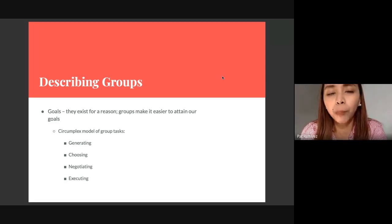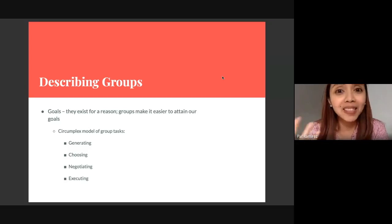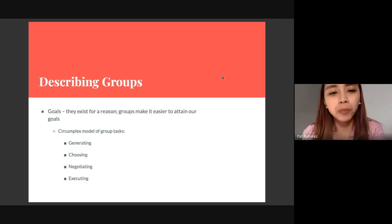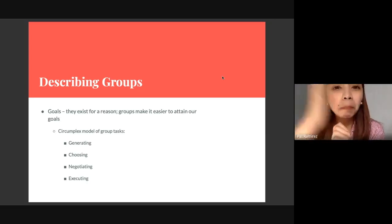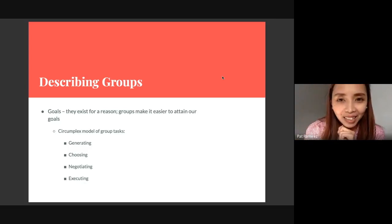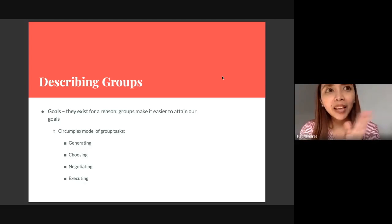We also have the concept of goals. In describing a group, we should know that groups exist for a reason, and sometimes the reason would be your objective or what we call goals. Groups make it easier to attain certain goals, which is why affiliation forms. When we talk about the circumplex model of group tasks, how do we choose goals and objectives? Four steps: we generate, we choose, we negotiate, and then we execute. We first generate and identify all possible goals - we list them. Then we begin to choose.